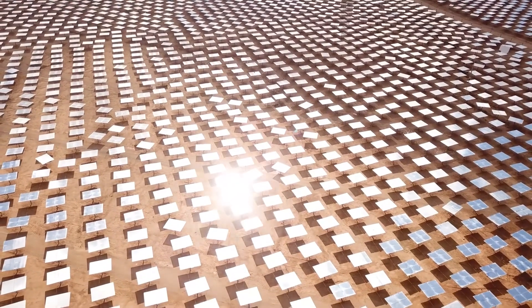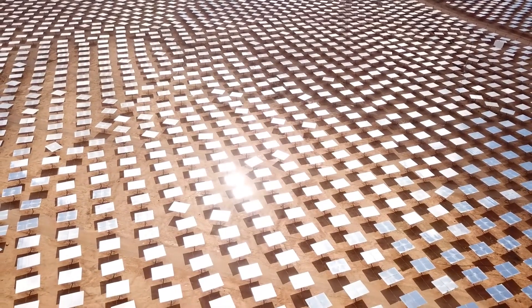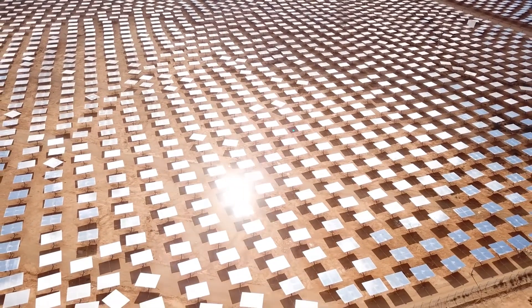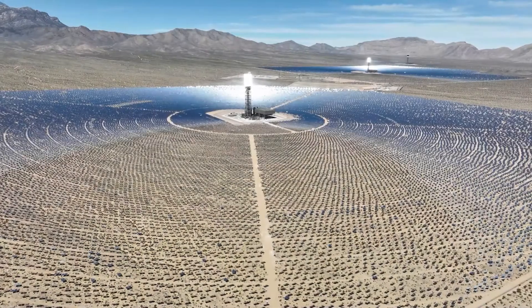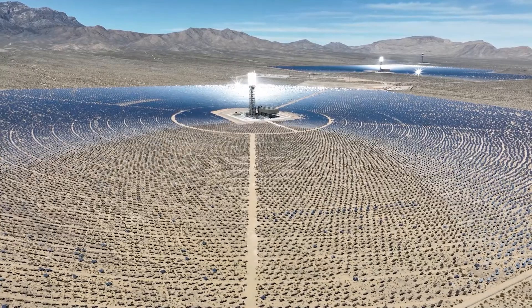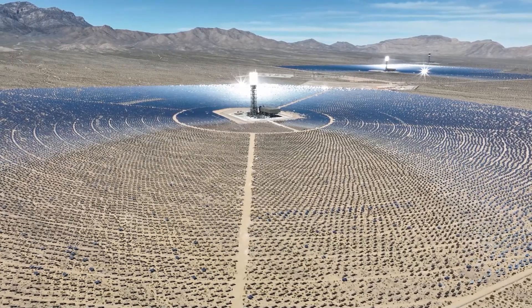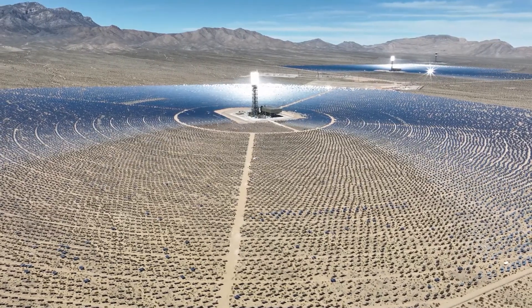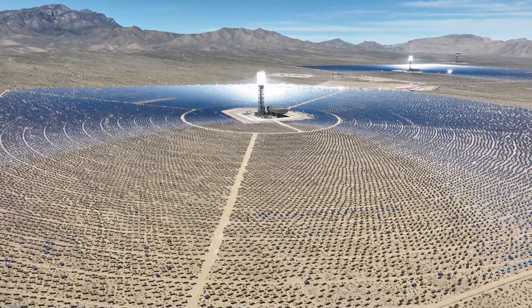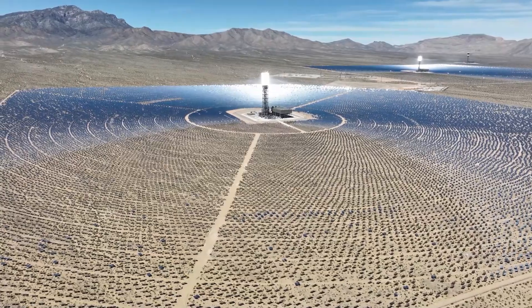Check out this dazzling array of mirrors. They're all reflecting the sun's light and focusing it on the very bright tower in the middle. So all of this light energy makes the top of that tower very hot and increases its energy. This energy is then converted into electricity to power our homes in the case of all of these lights in this hot tower.